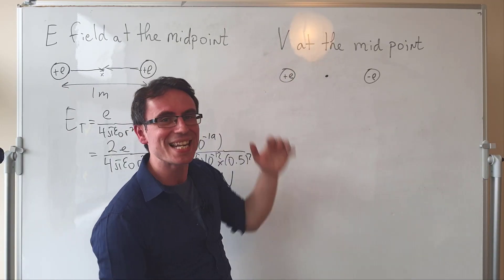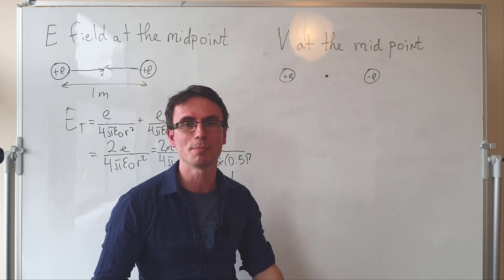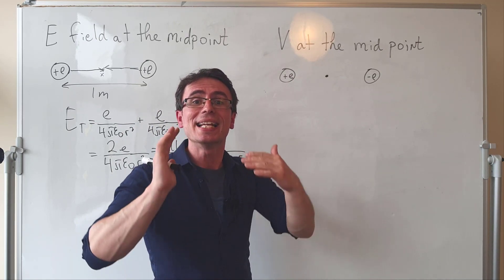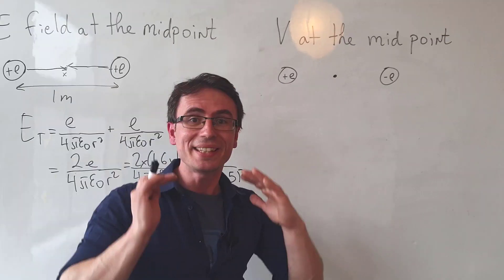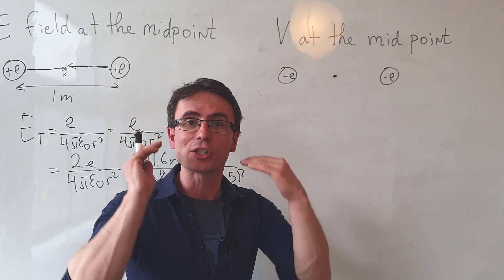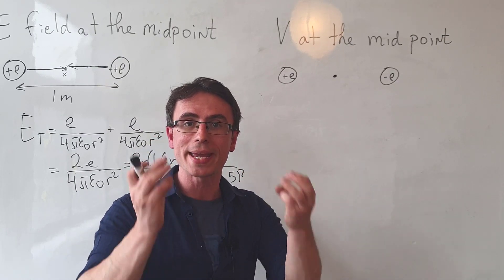But what if we needed to find the electric potential at the midpoint? Remember, the electric potential is actually a scalar quantity. This means that we don't have to worry about drawing arrows and all we need to do is sum up the algebraic expressions.